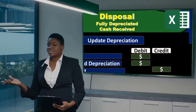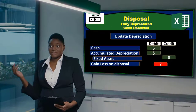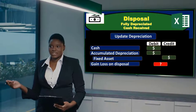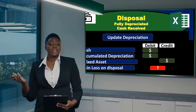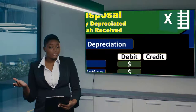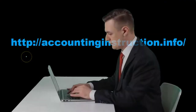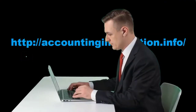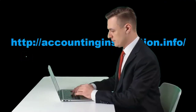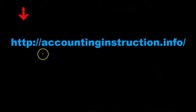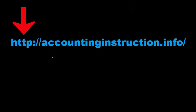In this presentation we will take a look at the disposal of property, plant and equipment for a fixed asset that is fully depreciated and cash is received upon the disposal process. For more accounting information and accounting courses, visit our website at accountinginstruction.info.